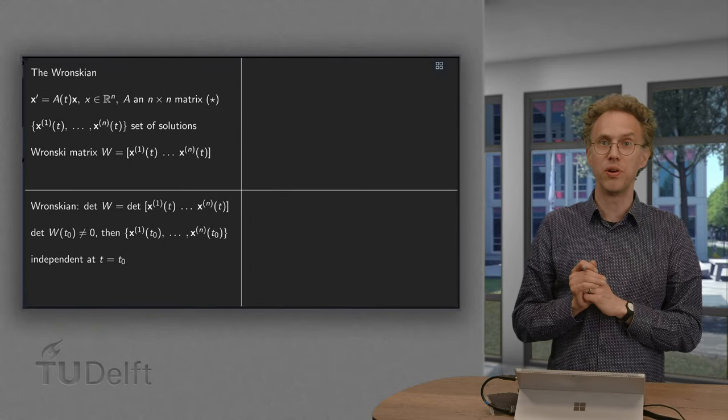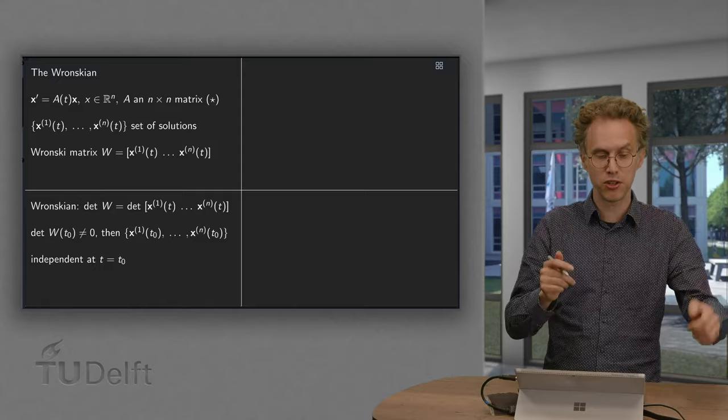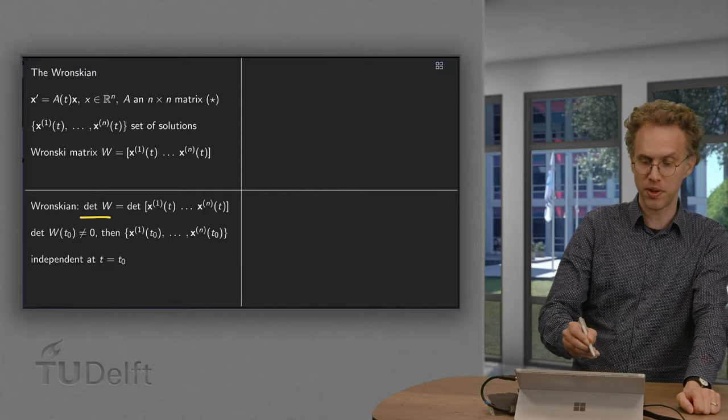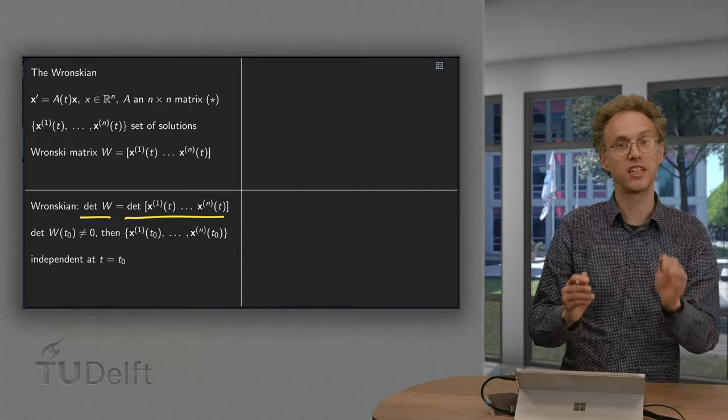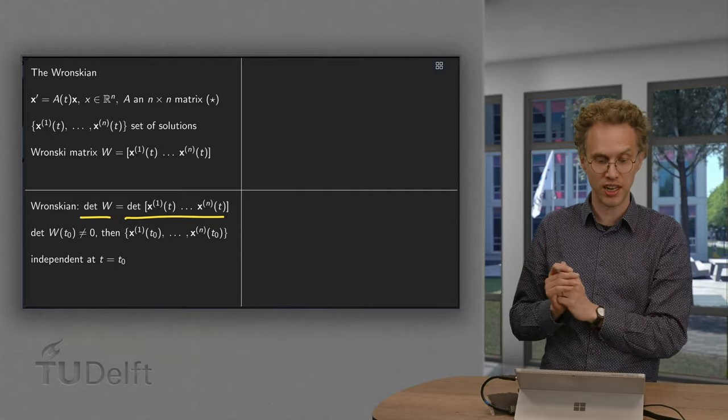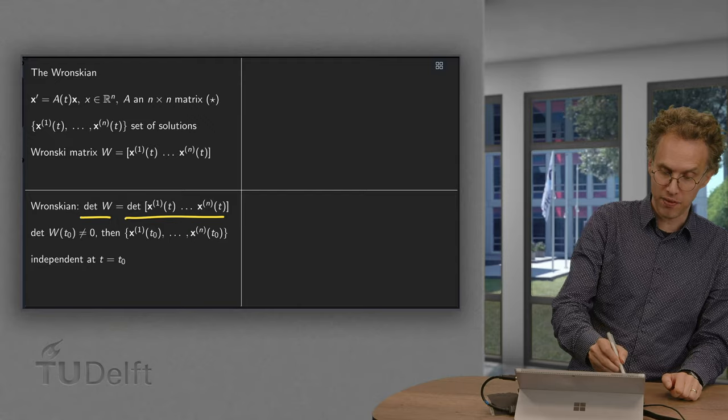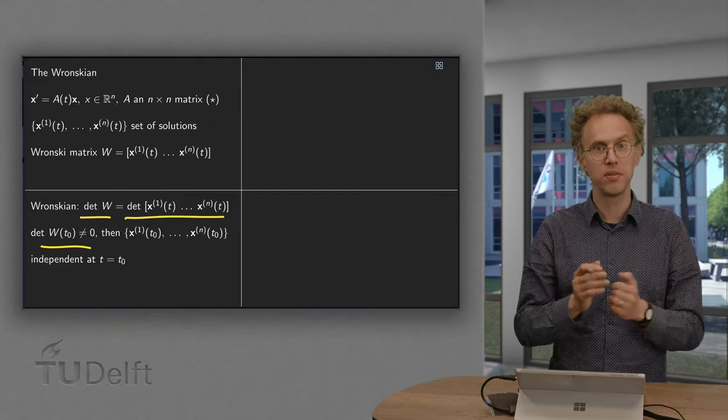Now when do we have a general solution? The Wronskian is the determinant of this matrix, so the determinant of this matrix with columns x^(1) through x^(n), that determinant should be non-zero. If the determinant is non-zero at some time t_0,